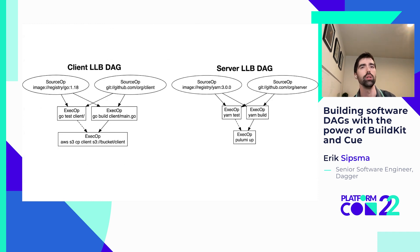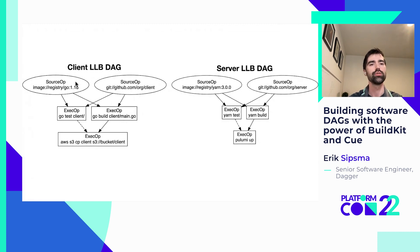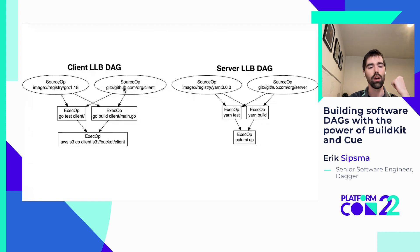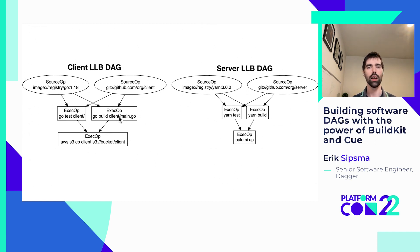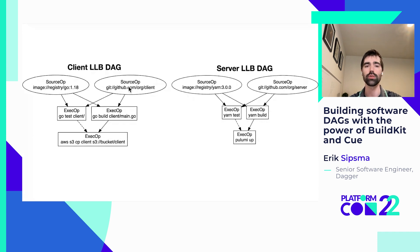The DAG that you provide to BuildKit is in a format called LLB. Here's an example — just the client step isolated. There's a source op in LLB that lets you import data from an external source. Here we're importing an image that has the Go toolchain. We also want to import our actual code from GitHub. Then there's another type of vertex in LLB called ExecOp. All it does is take its inputs, run commands on top of them, and then output the result — basically the original file system plus the changes you made. So you take your Go toolchain as your rootfs, mount your source code to /src, run 'go build', and your output will have all that plus the binary you just built. The last step deploys that binary to an S3 bucket — that's our release.